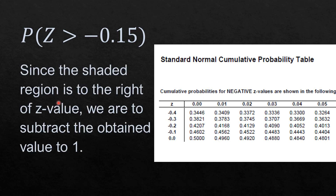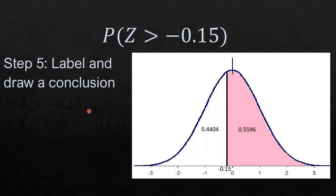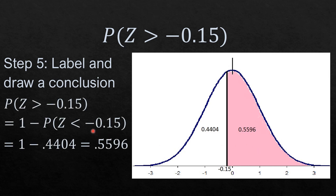Since the shaded region is to the right of the Z value, we subtract the obtained value from 1. Subtracting 0.4404 from 1 gives us 0.5596. So the area of the shaded portion is 0.5596. Algebraically, the probability that Z is greater than negative 0.15 equals 1 minus the probability that Z is less than negative 0.15, which is 1 minus 0.4404, giving us 0.5596.